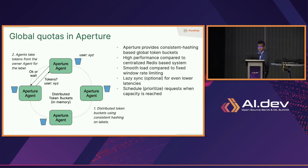Unlike Redis, which is an external dependency, this is much higher performance and designed for these counters and tracking a high rate of writes — Redis actually overloads pretty quickly with these kinds of workloads. The algorithms are also more advanced than a fixed window — it's a proper leaky bucket algorithm for much smoother traffic flows.